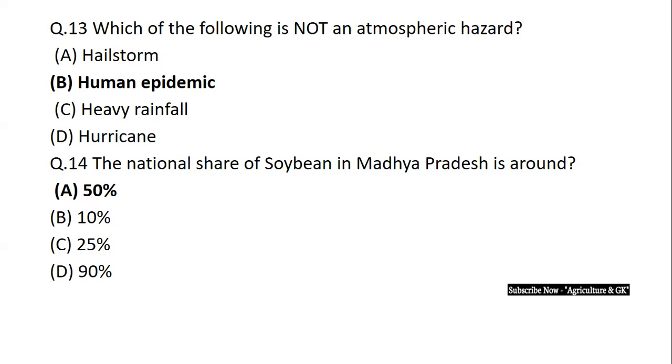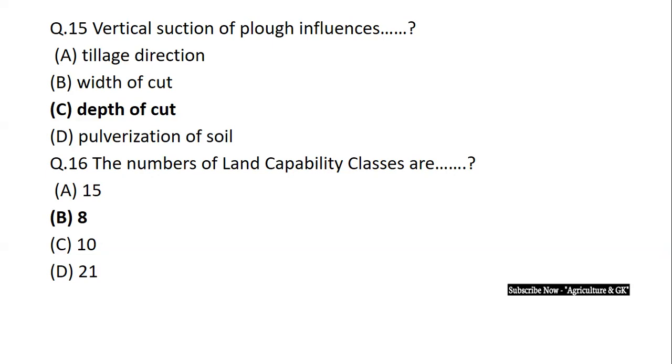Which of the following is not an atmospheric hazard? The correct answer is human epidemic. The national share of soybean in Madhya Pradesh is around 50%. Vertical section of plough influences depth of cut. The vertical section is the distance between the landslide and ground surface. If the landslide is slightly curved, it means the ground surface is slightly lower.